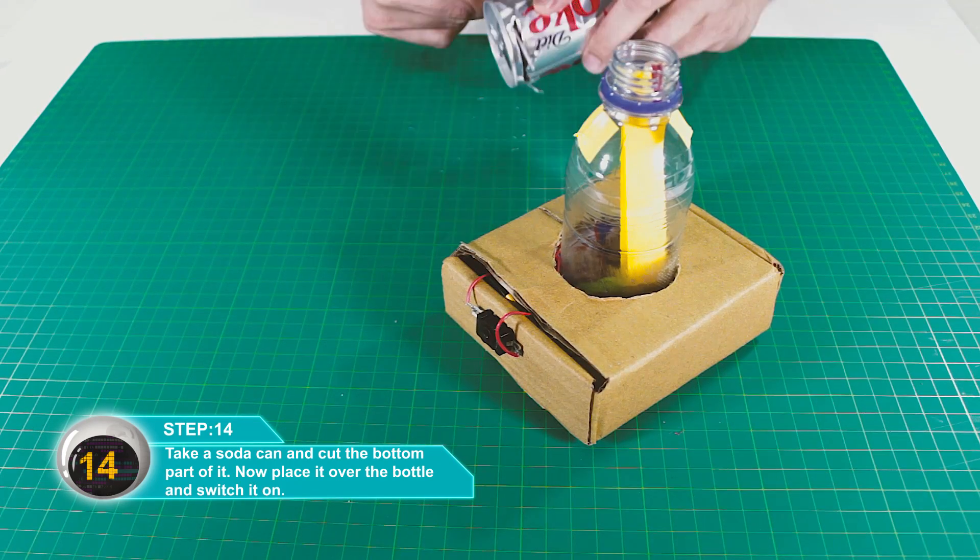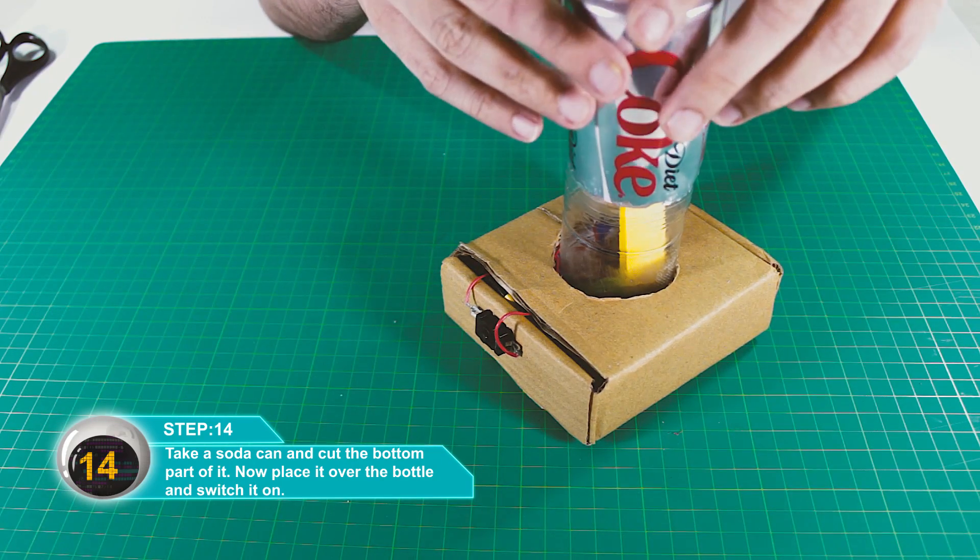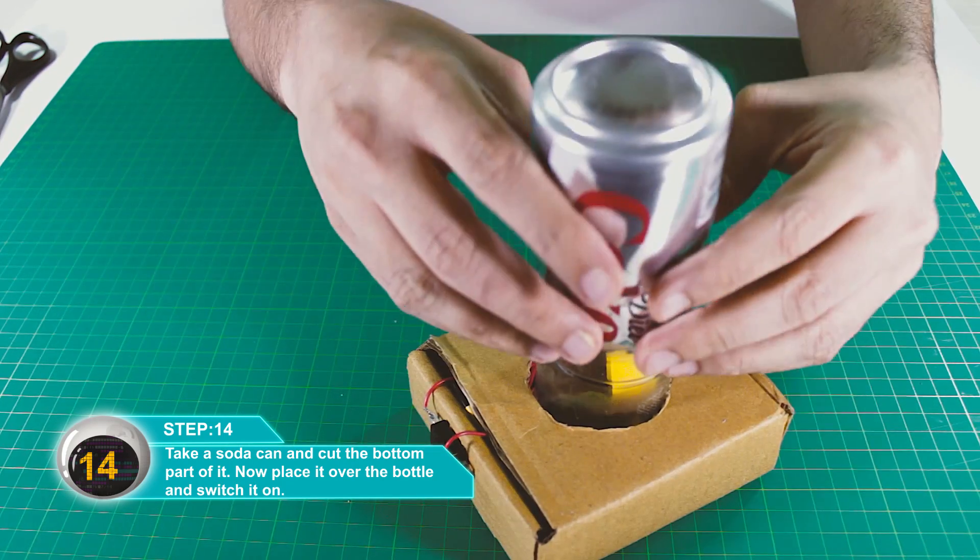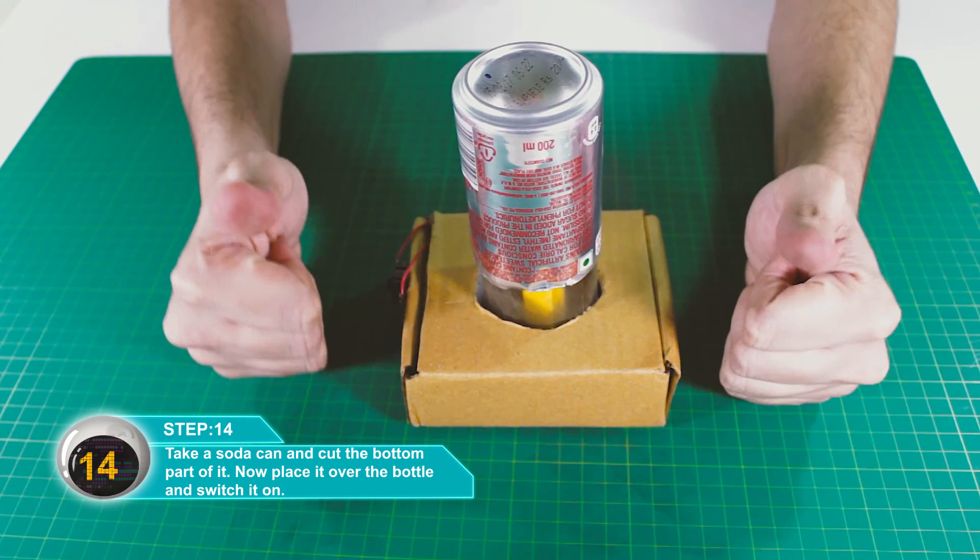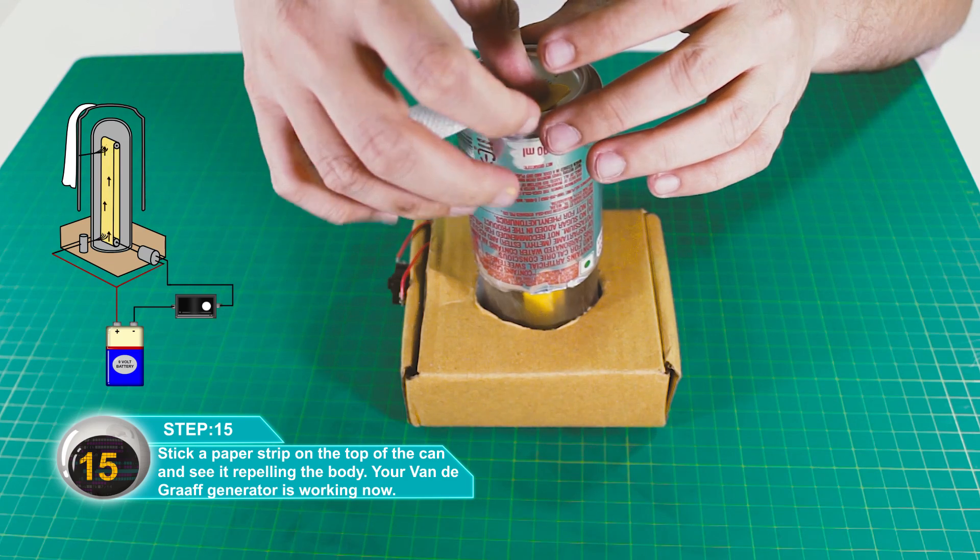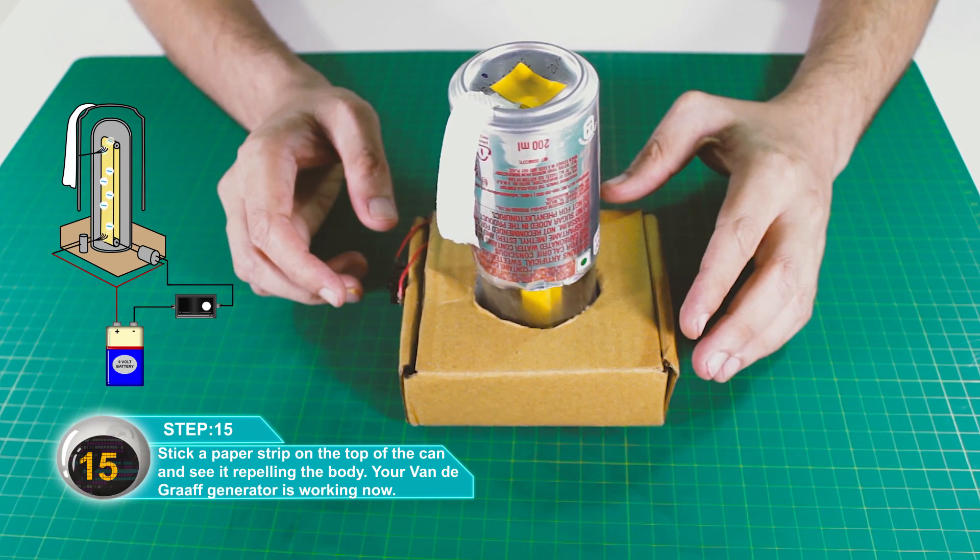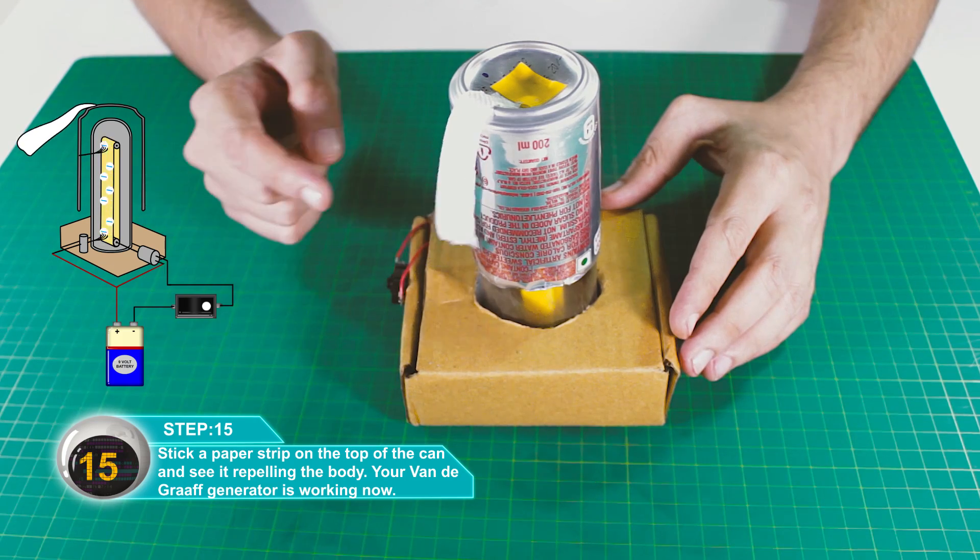Take a soda can and cut off the bottom part. Now attach it on top of the bottle and turn on the switch. Attach a paper strip on top of the can and watch it move away from the body. Your Van de Graaff generator is ready.